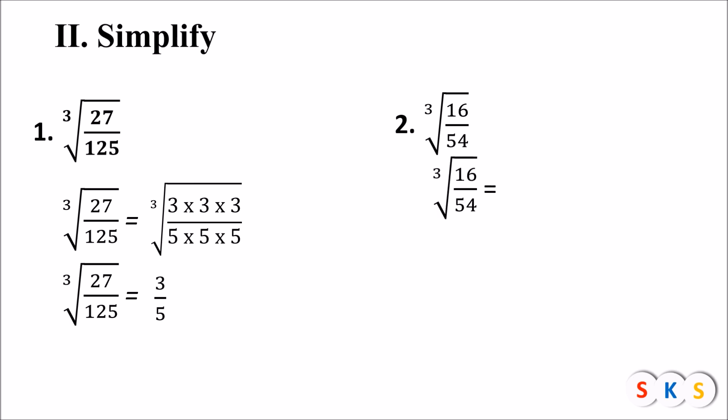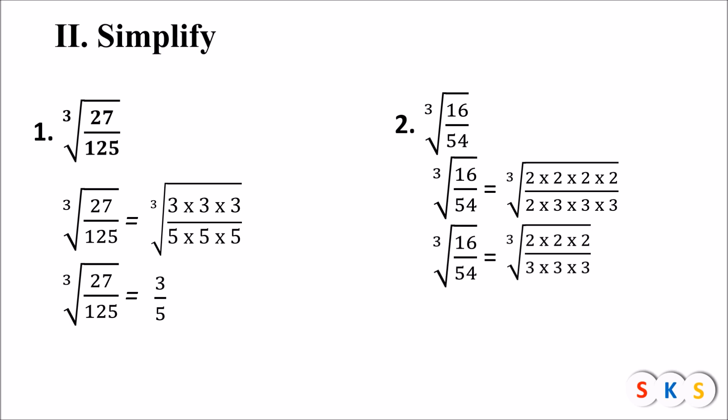Next question: cube root of 16 upon 54. We find the prime factors of numerator and denominator. Numerator: 2 × 2 × 2 × 2, and denominator: 2 × 3 × 3 × 3. One factor of 2 from the numerator and one factor of 2 from the denominator cancel out, giving us cube root of (2 × 2 × 2) upon (3 × 3 × 3), which equals 2 upon 3.